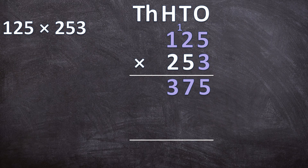Next we multiply 50 times 125. Two things to remember: first, cancel the carried 1 so we don't accidentally use it again. Second, we're multiplying by 50 not by 5, so we add a zero in the answer line. Now that we've written the zero we can multiply the digits. First, 5 times 5 is 25 — write down 5 and carry the 2.